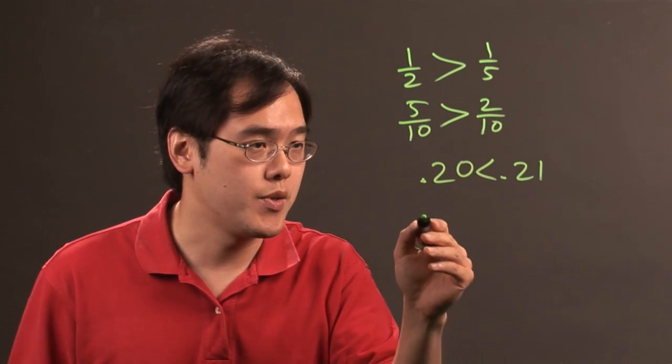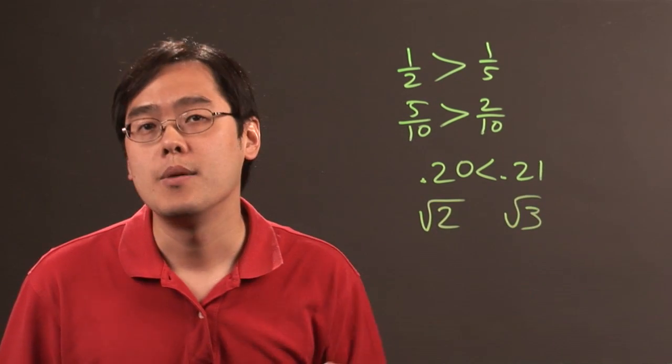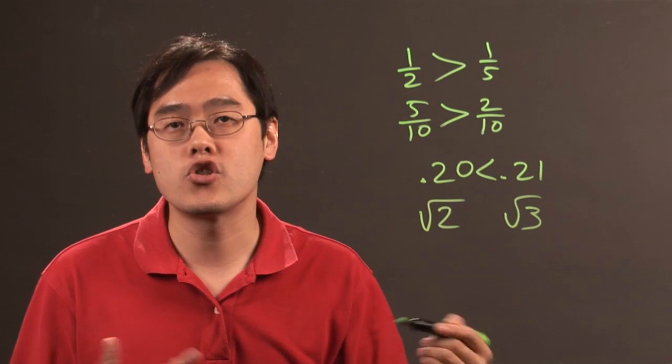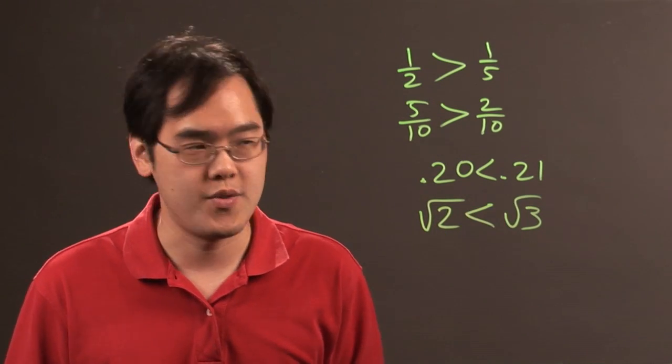If you're comparing radicals with each other, if you have square root of two, square root of three, because three is a larger number underneath the radical, square root of two is less than square root of three.